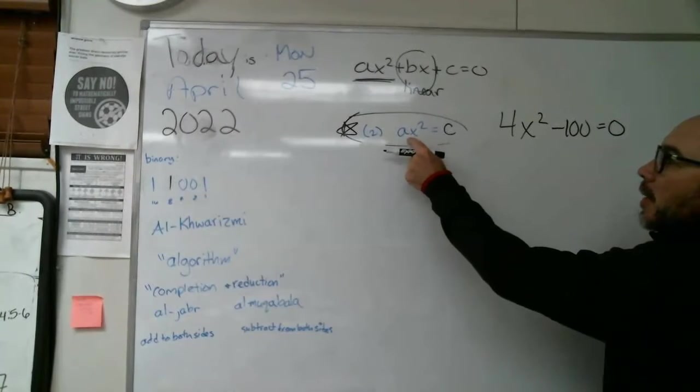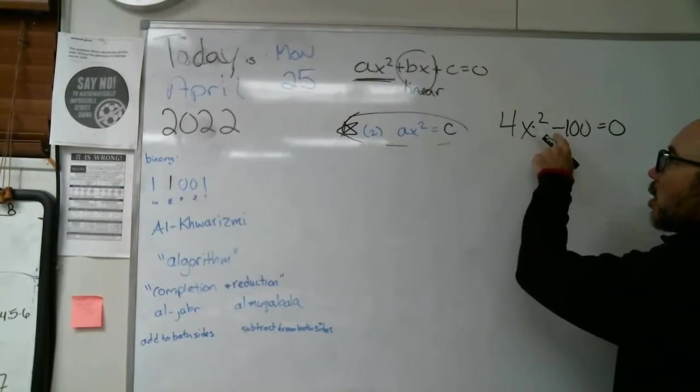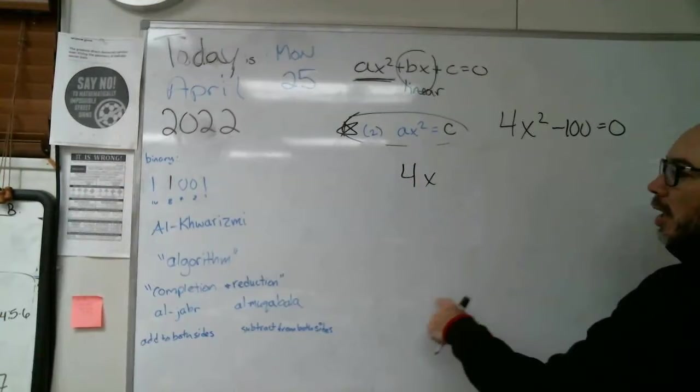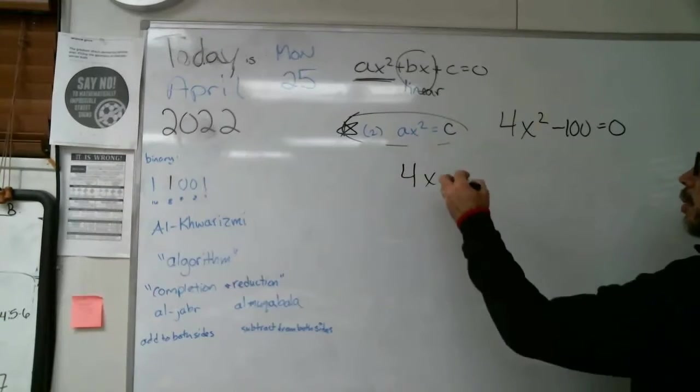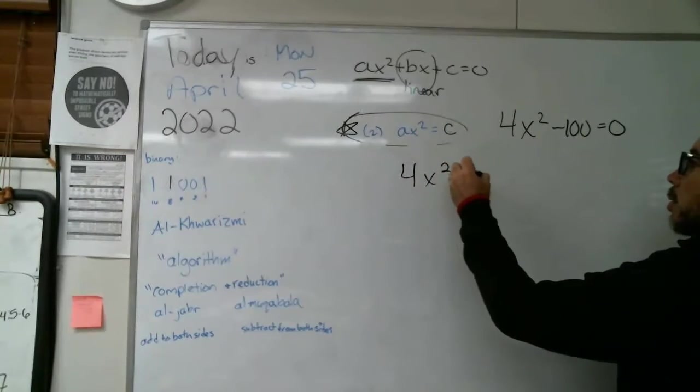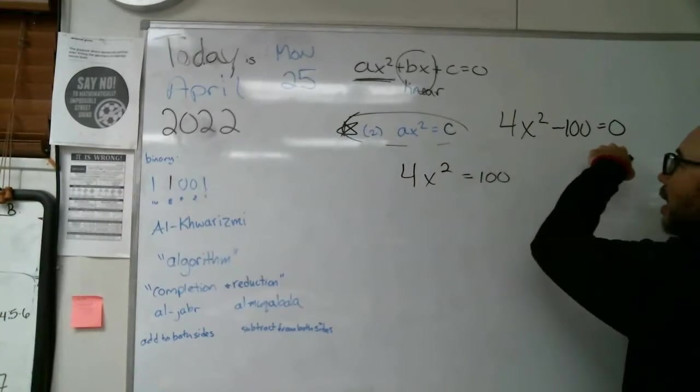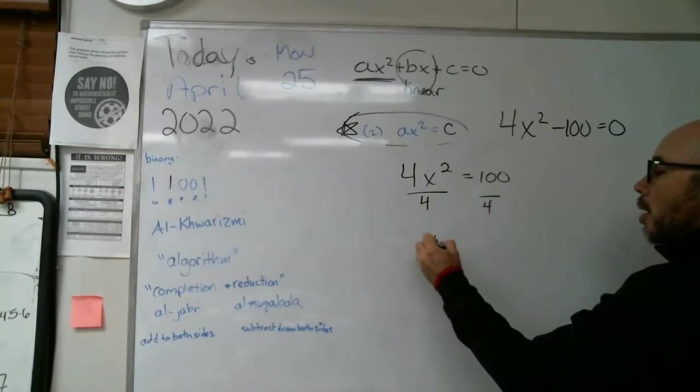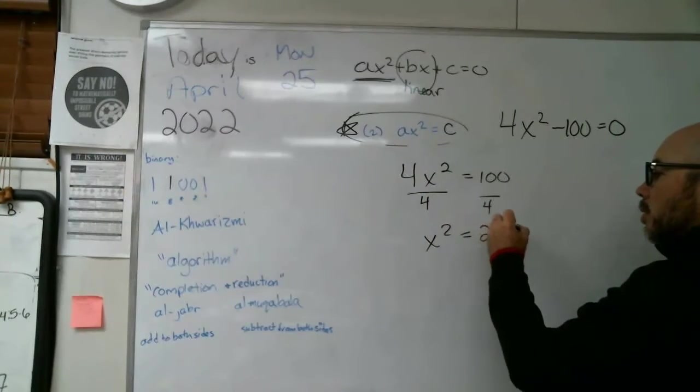Okay. And the other way would be to kind of set it up like this. Okay. So we don't want that negative 100. We want that over on the other side. We could algebra that thing, completion 4x squared equals 100 by adding 100 to both sides. And now we're going to divide by four.